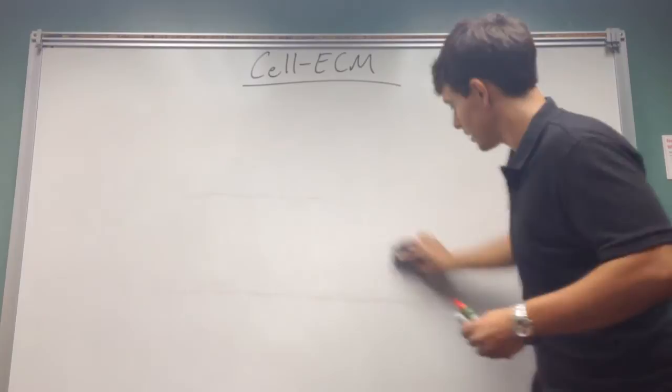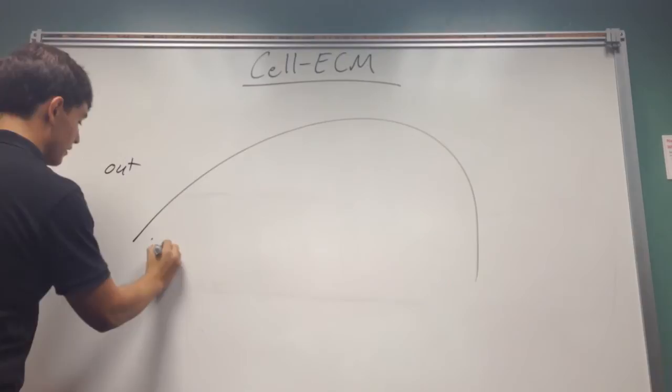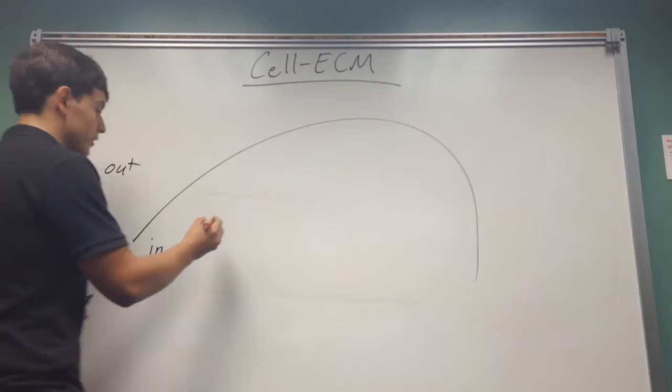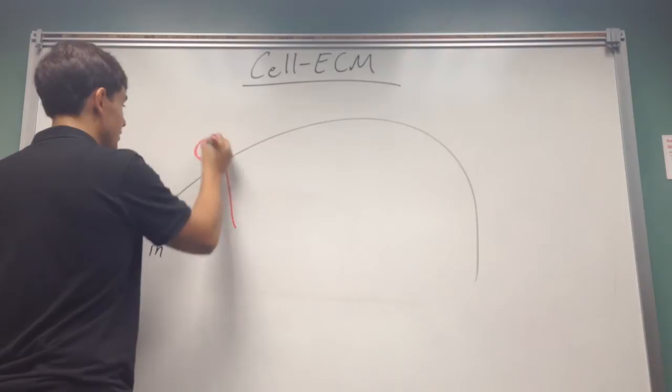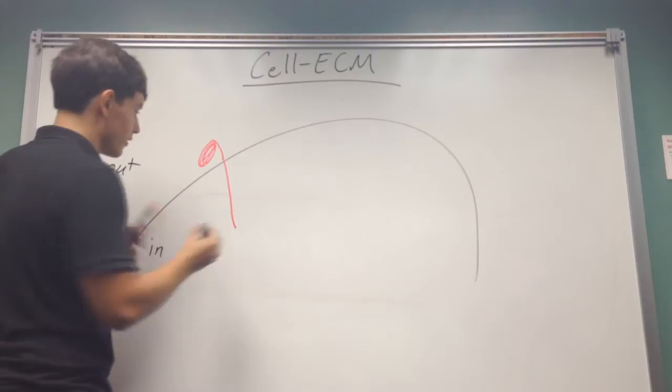All right, so drawing, this is a cell membrane. We have outside and then we have inside. We have that integrins are, at least in our case in the book and in class, are this dimer formation. Where they have two identical strands, which I'll draw in different colors, that are right next to each other.